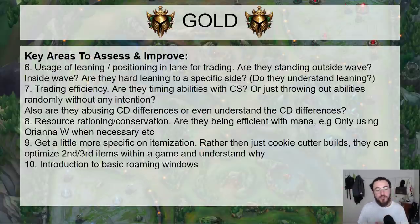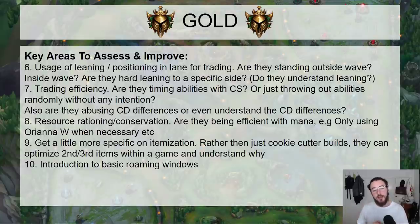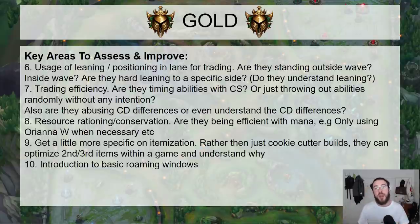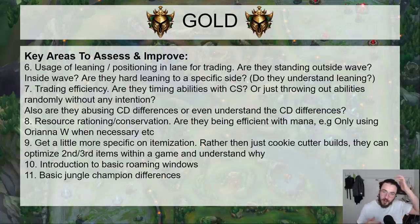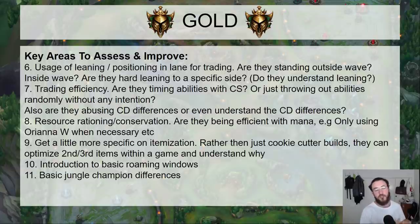The introduction to basic roaming windows: I don't really expect a gold player to understand roaming too deeply — I want them to focus on the lane — but they should know as a concept when it's efficient and when it's not. For example, you wouldn't want to roam if there are minions under your tower or if the wave isn't pushed out. And basic jungle champion differences: what does a Sejuani versus a Rek'Sai actually do differently — how do they impact and influence the map differently? Just starting to think about jungle champion differences.